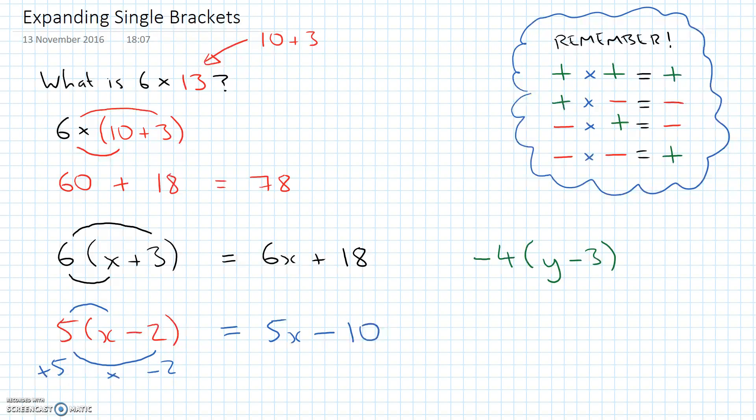So we'll follow our same rules. We need to multiply the term outside the bracket by the first term inside. And that's going to give us negative 4 times positive 1. Just says y, so we take that as positive. Well, a negative times a positive gives me a negative. So our first term is going to be negative 4y.